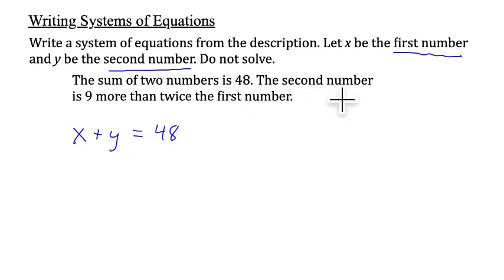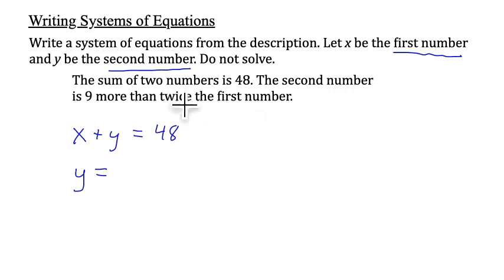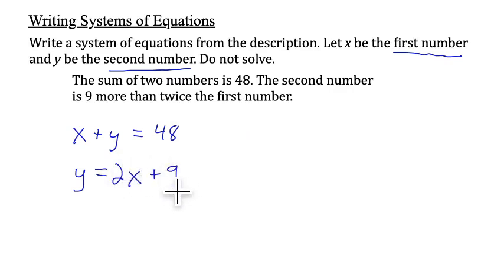Moving on, the second number is 9 more than twice the first number. So y equals 2 times the first number plus 9 — that is, 9 more than twice the first number. And here is our system of equations.